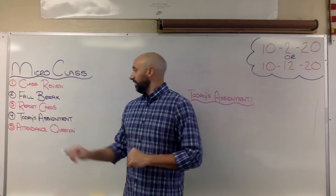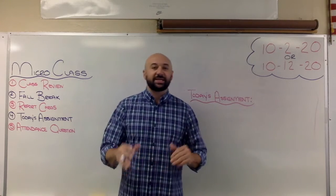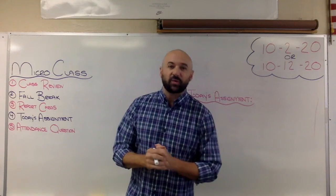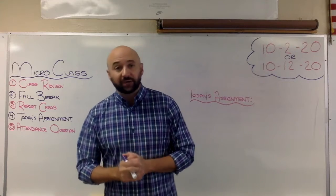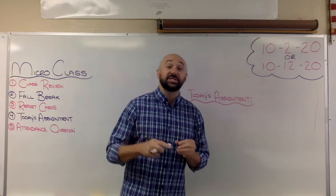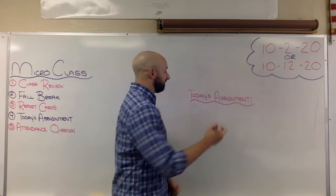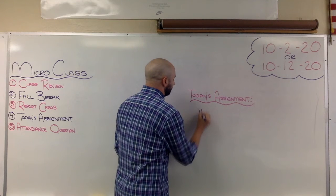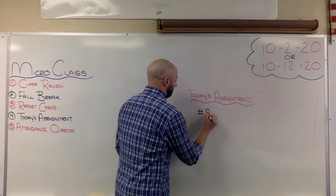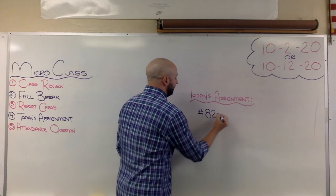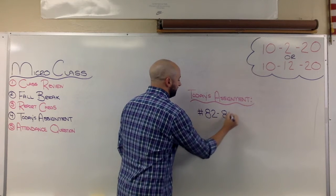All right, now back to Micro Class doing micro things. Last class we got all the way up to number 81, so we're going to pick it up right back there today. Your assignment, if you choose to accept it—even if you don't choose to accept it, you still must do it—we are going 82 to 86.